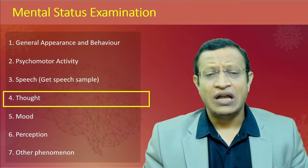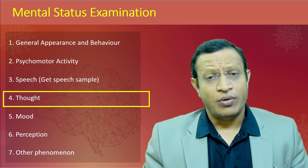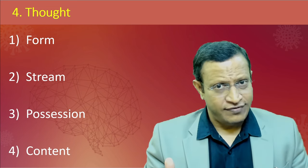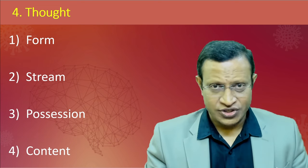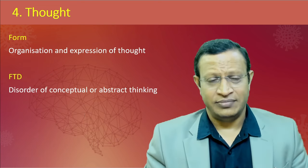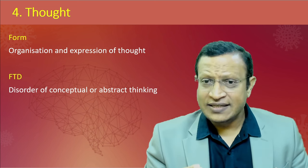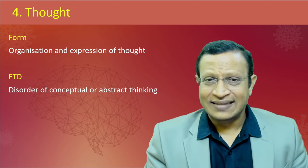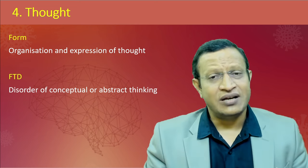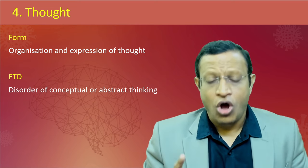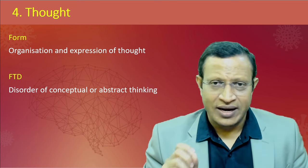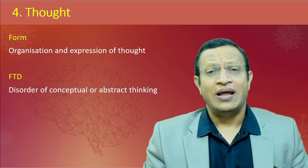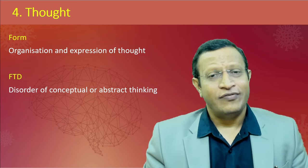After assessing speech, we move towards thought. You have already obtained a good speech sample, and now you assess the form, stream, possession, and content of thought. Form is the organization and expression of thought - or in Goldstein's words, the loss of abstraction that occurs in formal thought disorder. Conceptualization or abstractability is considered form. In formal thought disorder, there is a disorder of conceptualization or loss of abstract thinking.